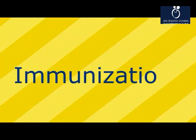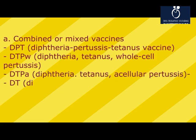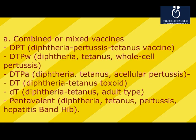Immunization: (A) Combined or mixed vaccines include DPT (diphtheria, pertussis, tetanus), DTwP (diphtheria, tetanus, whole-cell pertussis), DTaP (diphtheria, tetanus, acellular pertussis), DT (diphtheria tetanus toxoid), Td (diphtheria tetanus adult type), and pentavalent vaccine (diphtheria, tetanus, pertussis, hepatitis B, and Hib).